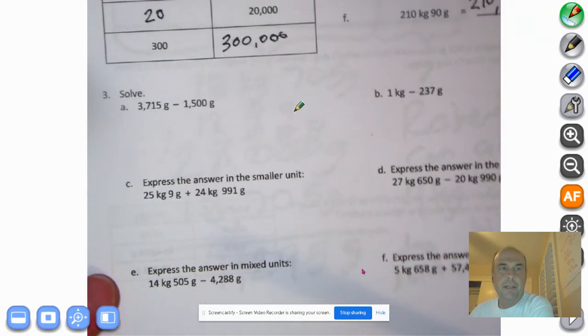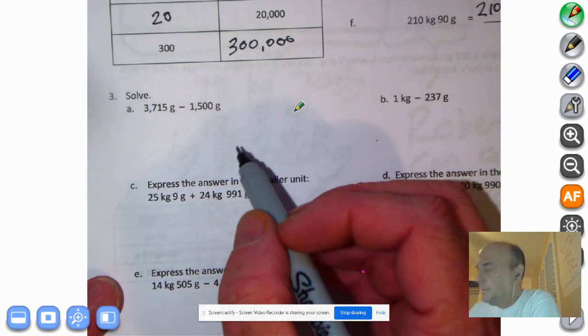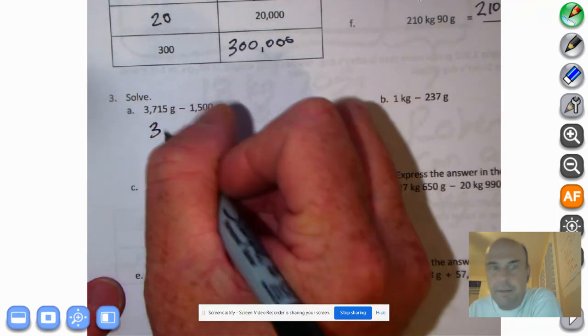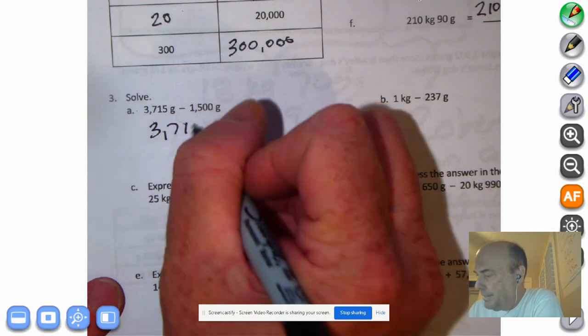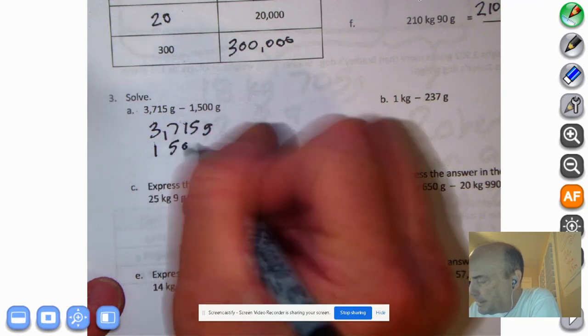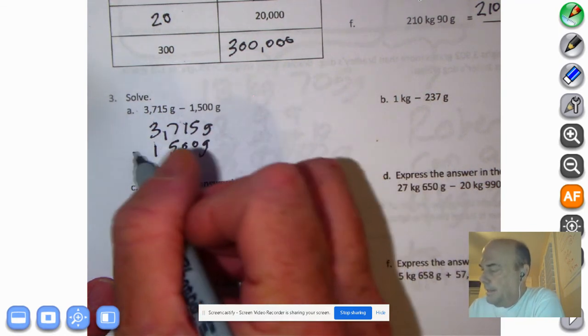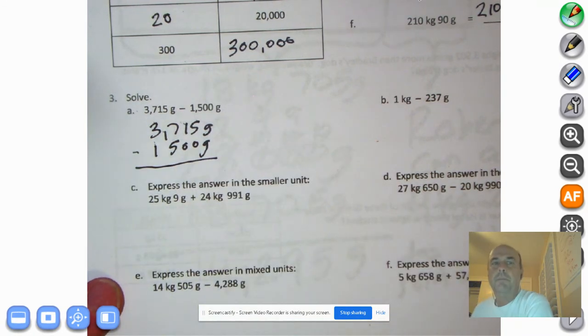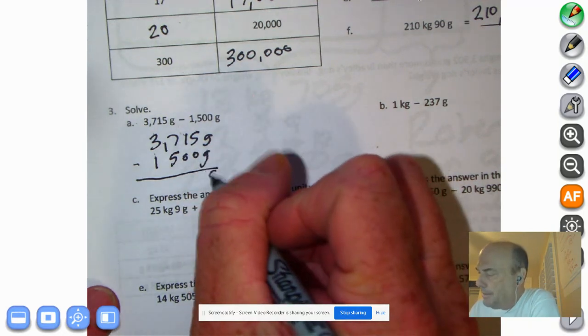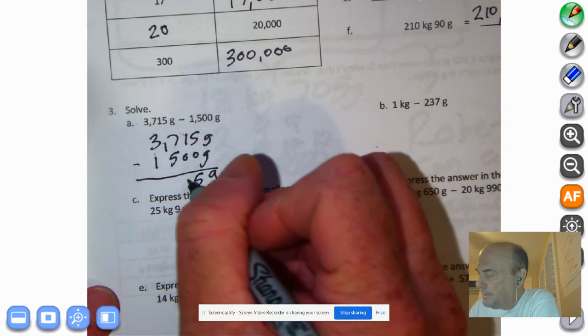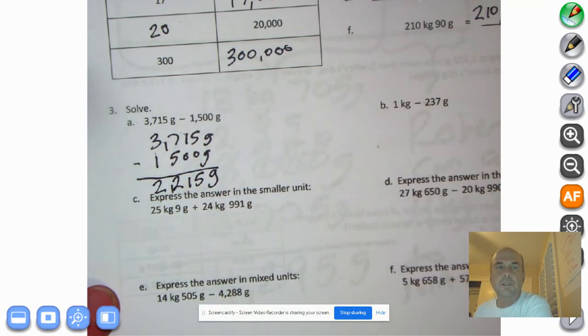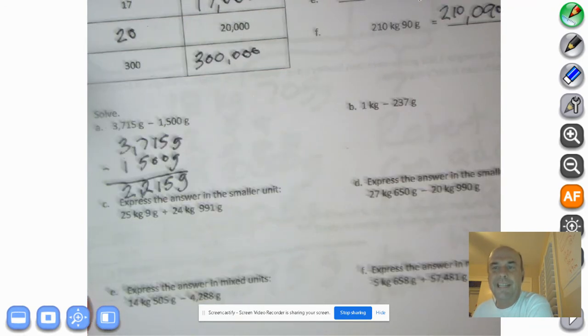Here we go. Okay, we're going to solve. Once again, I'm going to use my simplified strategy of 3,715. 2,215 grams minus 1,500 grams. Actually, I didn't have to do any simplified strategy on this one. And go ahead and hit pause, and you can tackle this problem on your own. And welcome back. Put the grams down there. 5 minus 0 is 5. 1 minus 0 is 1. 7 minus 5 is 2. And 3 minus 1 is 2. 2,215 grams. I bet you smart boys and girls got them all right.